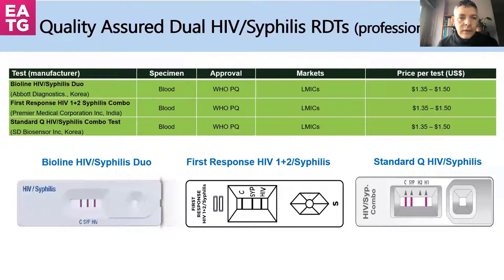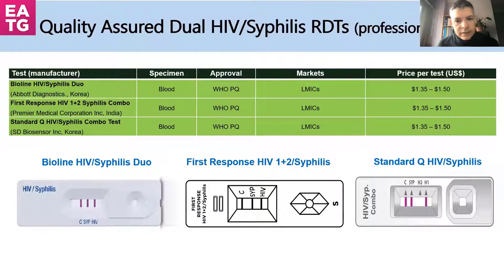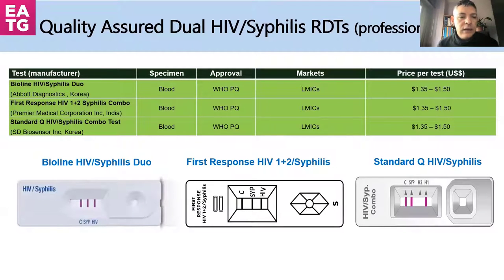These are the currently available dual HIV/syphilis tests. At the moment, these tests are used for professional use at the health facility level. All are blood-based. We have three of them, with prices quite affordable for low- and middle-income countries. These are very simple lateral flow assays, similar to the HIV rapid test — and there is potential for self-testing if you can think of it.